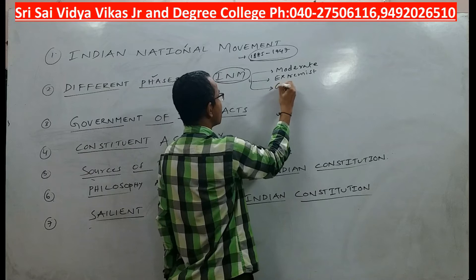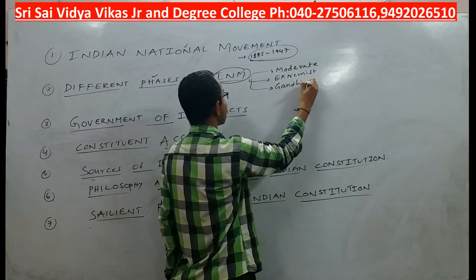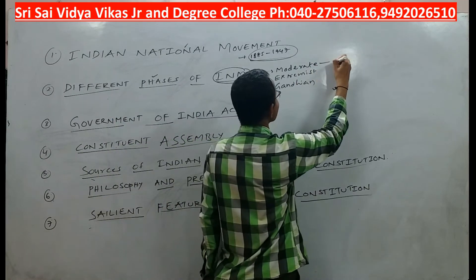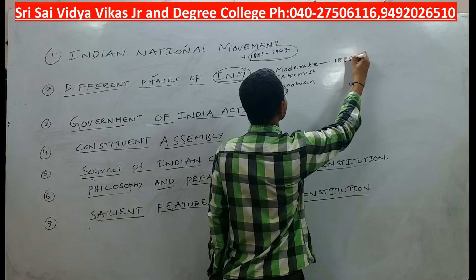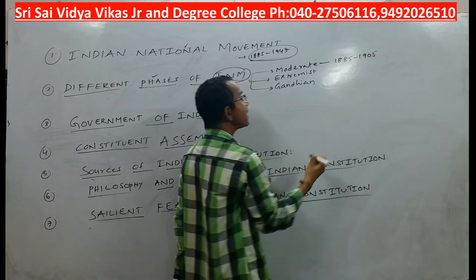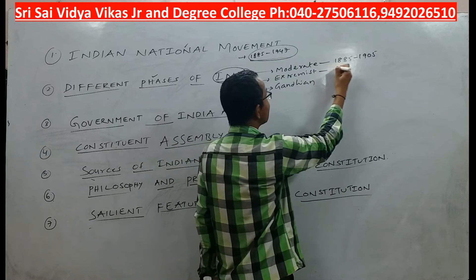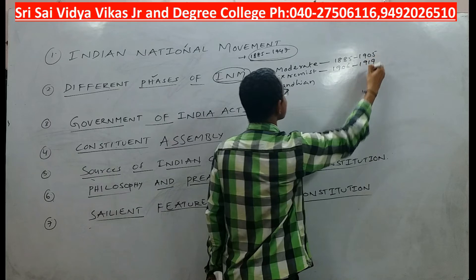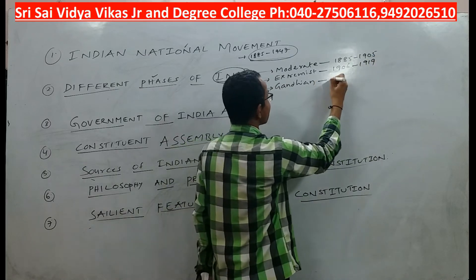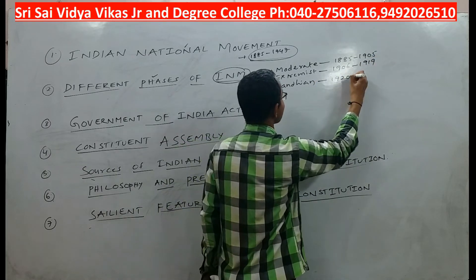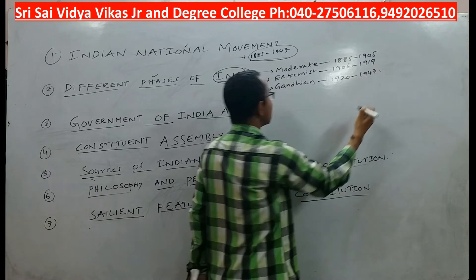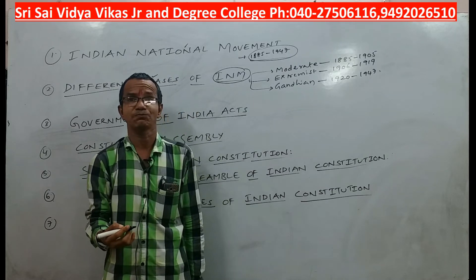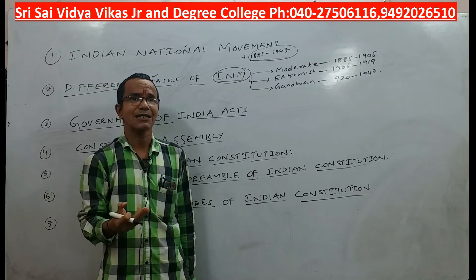The three stages are: the moderate stage from 1885 to 1905, the extremist stage from 1906 to 1919, and the Gandhian stage, which is the final stage from 1920 to 1947.